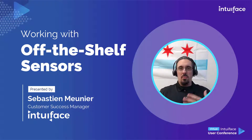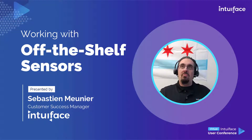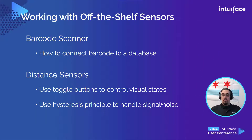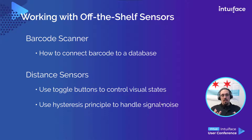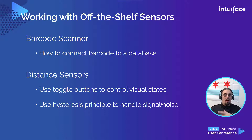So why sensors? You may have attended the 'How to Communicate with the World' session where we saw how to connect external peripherals. Here we are really going to focus on how to use them within Interface, within Composer. We'll take two examples: first, a barcode scanner — but it could be any peripheral like RFID, barcode, or QR code — something that gives you a unique ID relating to an object, like a product in a catalog or an employee in a database. The second case is how to use sensors like a distance sensor, analog sensors that provide a continuous value, where you add a threshold to decide if something should happen in the experience.